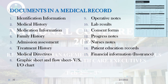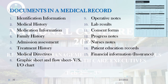Documents usually seen in a medical record include: identification information of the patient, medical history, medical information, family history, admission assessment, treatment history, medical directives, graphic sheet, flow sheets, vital signs, I/O chart, operative notes, lab results, consent forms, progress notes, nurses' notes, patient education records, and financial information such as insurance details.